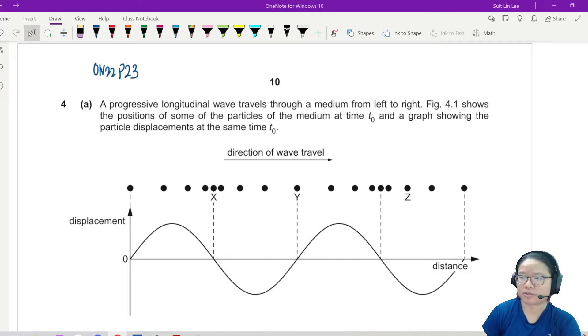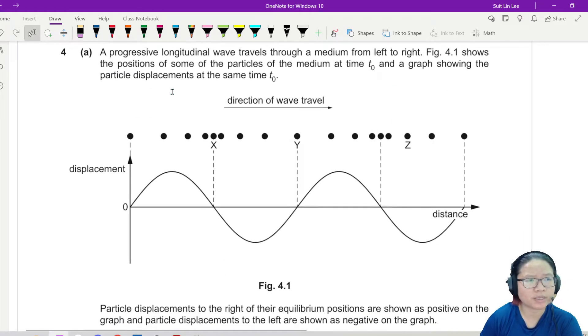This is another wave question from Winter 22, paper 23. It's asking us, basically giving us a drawing of a sound wave. So a progressive longitudinal wave travels through a medium from left to right. This is a particle of the sound wave, and Figure 4.1 shows the position of some of the particles at time t-naught and a graph showing the particle displacement at the same time t-naught.